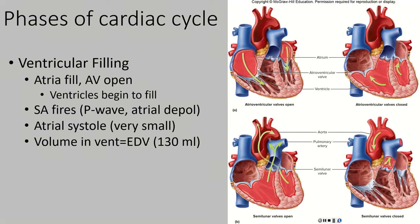At this time, the ventricles are as relaxed as they are going to get, and they are as full of blood as they are going to get. The blood in the ventricles at this time — that volume of blood — is called the end-diastolic volume, or EDV. The ventricles are at the end of diastole, right before they start to contract to push blood out. There is about 130 milliliters in each ventricle, so the end-diastolic volume is about 130 mL.